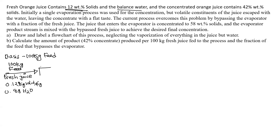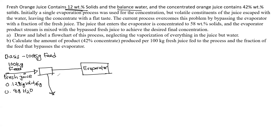We set up the flowchart with a divider splitting the feed into a bypass stream and a stream going to the evaporator. The evaporator output is labeled M1. The bypass stream is labeled accordingly.